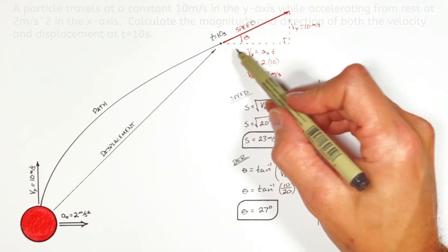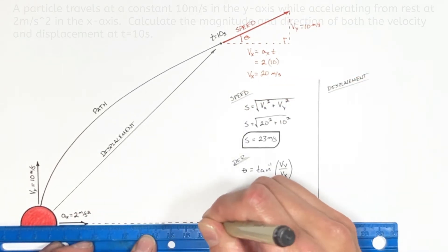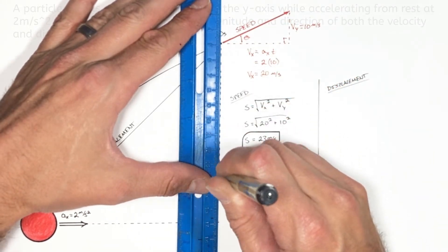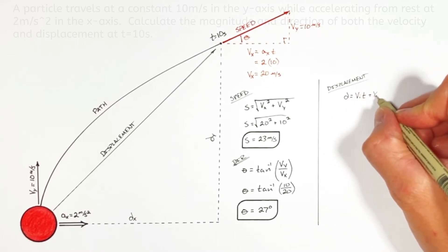See just like the speed vector was broken up into x and y components we can break the displacement vector up into x and y components and we can solve for each of those components using the displacement equation.